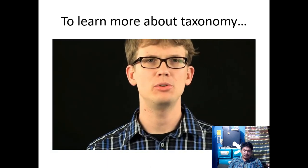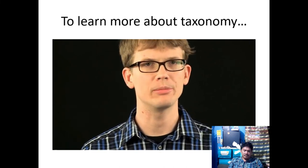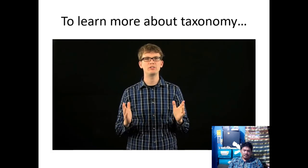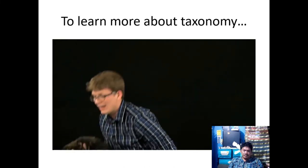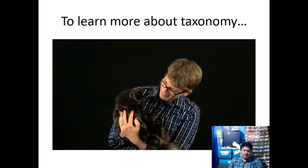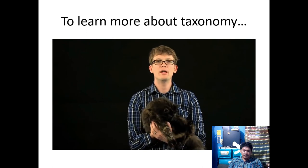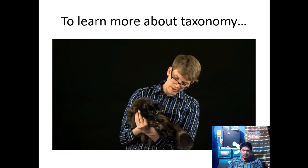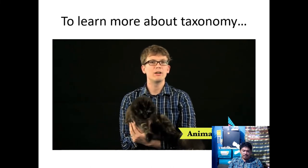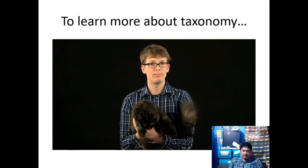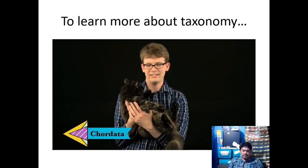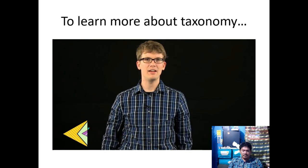We use the taxonomic system to describe the common ancestry and evolutionary history of an organism. Looking at the phylogenetic tree, you can tell that humans are more closely related to mice than to fish, and more closely related to fish than to fruit flies. Let's follow a cat through all the taxa from kingdom to species. Cats have cells with nuclei and membrane-surrounded organelles, are multicellular, heterotrophic, and have three germ layers as embryos — placing them in kingdom Animalia. They have a spinal cord protected by vertebrae, placing them in phylum Chordata.